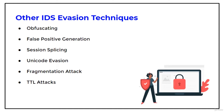Attackers manipulate the path referenced in the signature to fool the host intrusion detection system. Attackers can encode attack patterns in Unicode to bypass IDS filters but still be understood by an IIS web server. Attacks on encrypted protocols such as HTTPS are often obfuscated if the attack is encrypted.